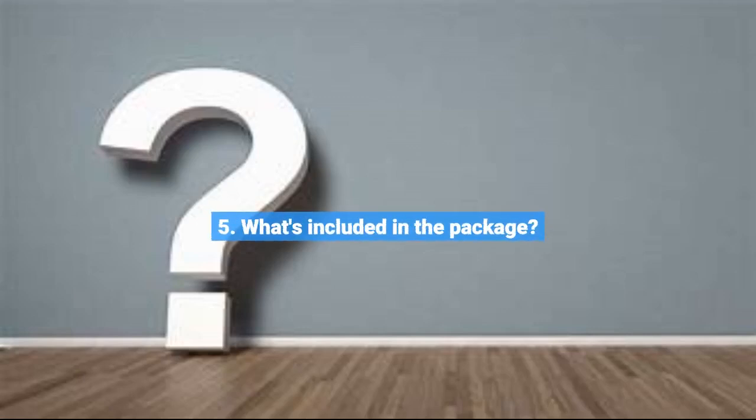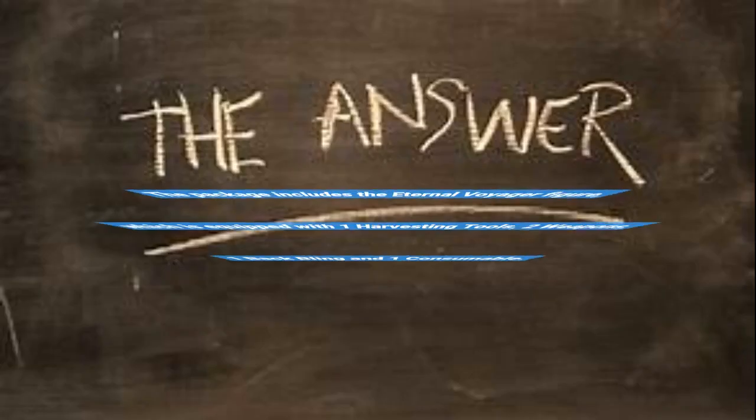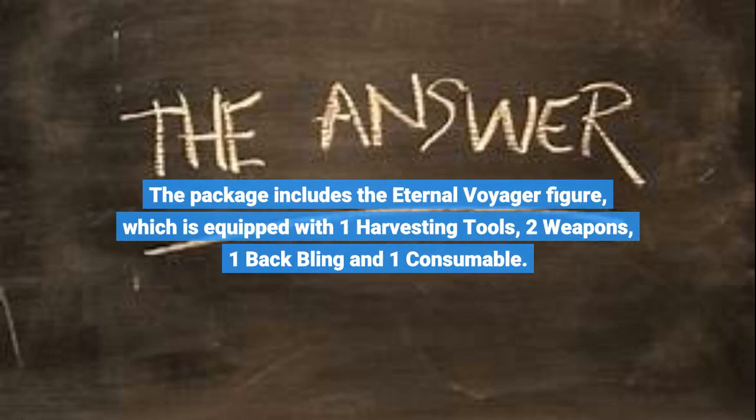Question 5: What's included in the package? The package includes the Eternal Voyager figure, which is equipped with one harvesting tools, two weapons, one back bling and one consumable.